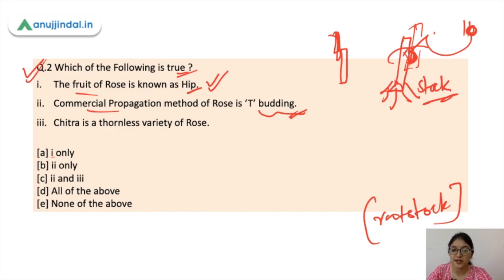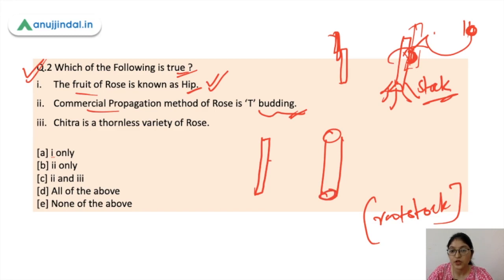What do we do in tea budding? First, you take the rootstock stem and make a vertical cut followed by a horizontal cut — this forms a T-shape. So it is called T budding or tea budding.